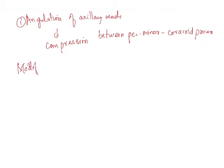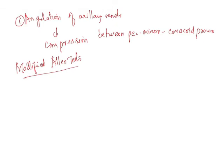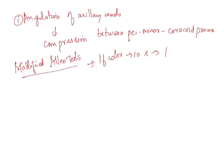One is your modified Allen's test, very important. In this you instruct the patient to clench his fist, and then you occlude both arteries - ulnar artery and radial artery. Then you have to allow the patient to unclench his fist again. Then release the ulnar artery. If the color returns to the hand within 10 seconds, this indicates adequate circulation. This is only time factor. If the color returns within 10 seconds, it means they have adequate circulation.